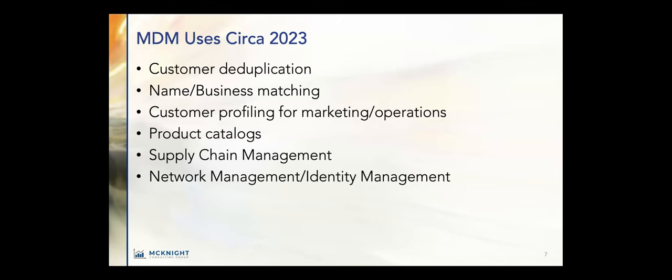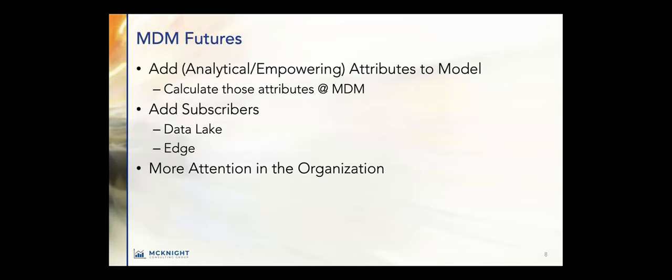Here's what we're doing with MDM now: customer deduplication, name and business matching, customer profiling for marketing and operations, product catalogs, supply chain management, network management, and identity management. These are great starters for MDM. A year or two ago they probably would have been considered advanced uses of MDM. But now we've got to move along into machine learning, analytical applications, and the things I'm going to get to further in the presentation.